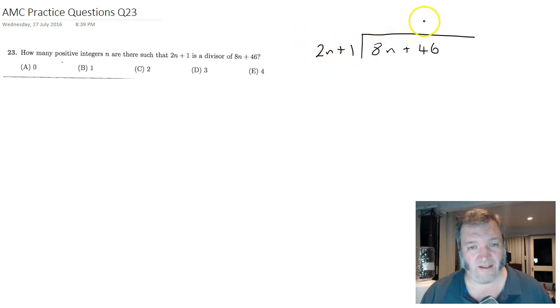how many times does 2n go into 8n? It goes in four times. So I could say four times 2n is 8n, and four times 1 is 4. When we do division, we do our subtraction, and I am left with 42.